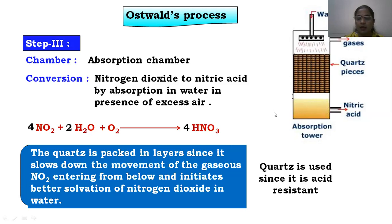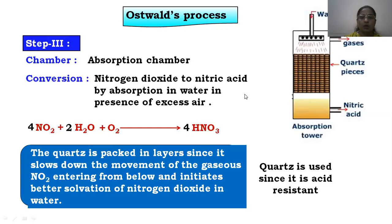An important reason we prefer quartz material is that quartz is acid resistant. Since vapors of nitric acid and nitric acid itself is a highly corrosive acid, we need a material that will not get affected by it. This completes the three important steps involved in Oswald's process for the preparation of nitric acid in industry. Thank you.